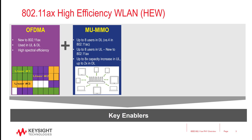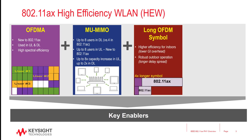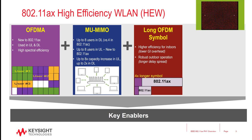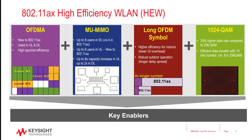For multi-user MIMO, 802.11ax extends the maximum number of downlink users to 8 and adds support for 8-user uplink multi-user MIMO, resulting in an 8-fold increase in uplink capacity and a 2-fold increase in downlink capacity. Other enablers, such as long symbol time, will improve the robustness of outdoor deployment. And even though efficiency is the main goal, new features such as 1024QAM will deliver improved throughput. Let's quickly look at each one of these enablers in a bit more detail.